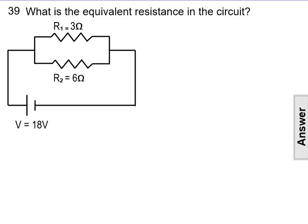What is the equivalent resistance in the circuit? The equivalent resistance requires us to look at R1 and R2. The value for R1 is 3 ohms. The value for R2 is 6 ohms.